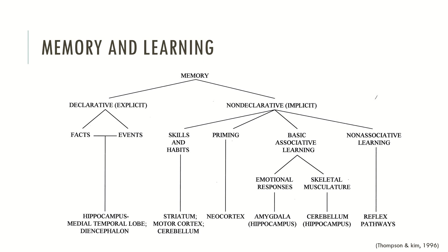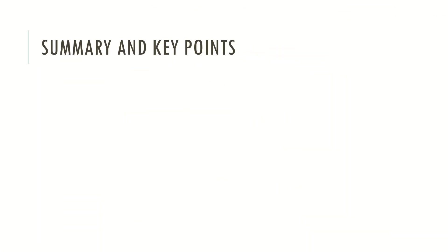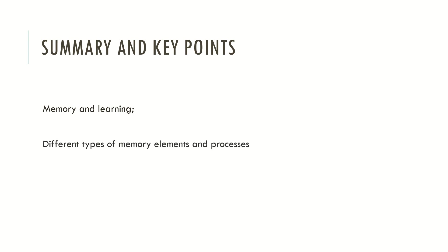I know that memory and learning are very complex themes, but don't worry — in the future I will produce different videos detailing more of these aspects of memory. Memory is a very complex neurocognitive process. Memory and learning is the human domain that is very important in everyday life, important when we need to remember ourselves and adapt to our lives. There are different types of memory elements and processes, and we saw that there are several neuronal structures associated with different types of memories.